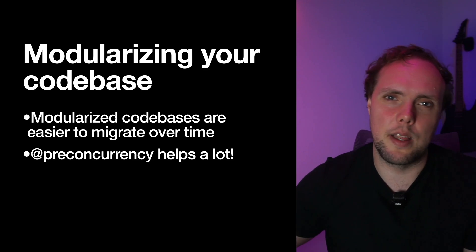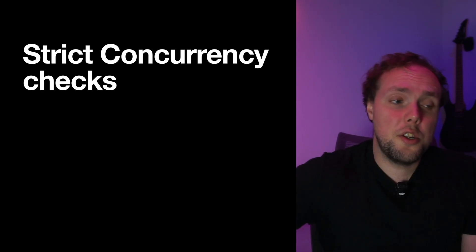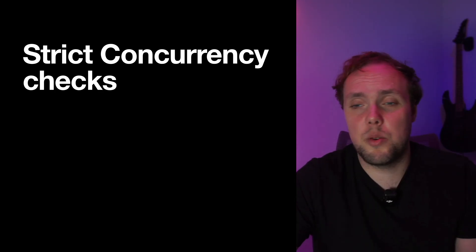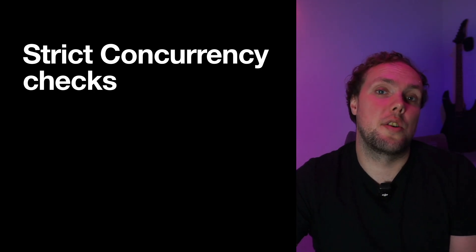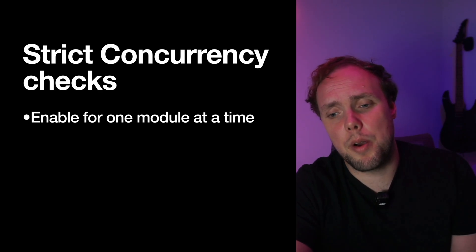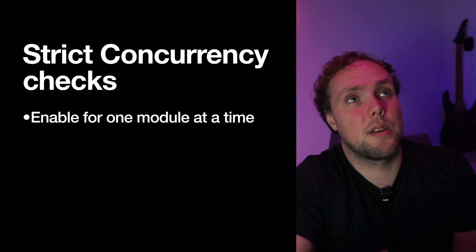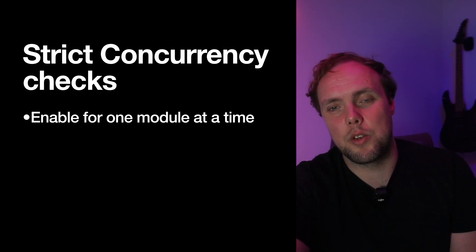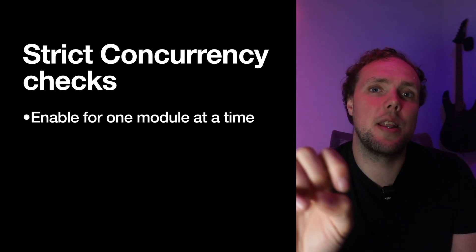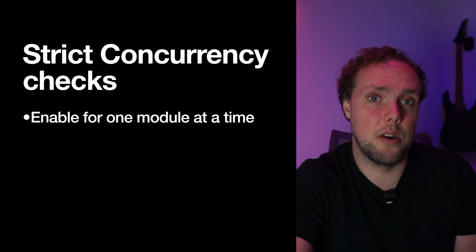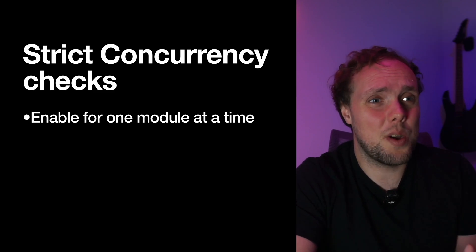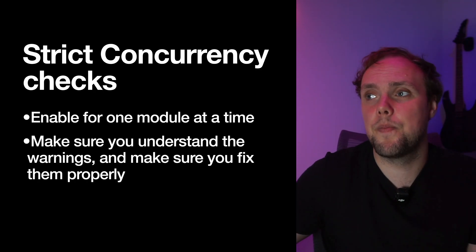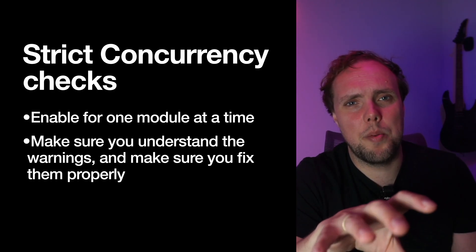Once you have a sense of where you're at and have thought about modularization, it's time to start turning on strict concurrency checks — one module at a time. Strict concurrency checking means the compiler will take a close look at your code and pretend it's in Swift 6 language mode, while still being in Swift 5 mode, giving you warnings for things that will be errors down the line. This is a great way to get a sense of how many problems you have and need to solve.